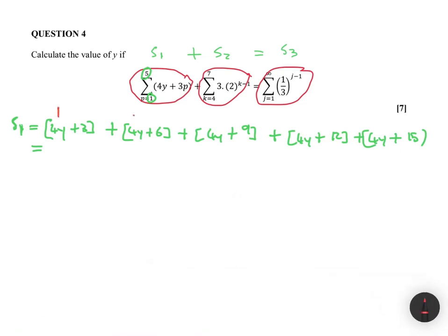Now adding all these terms together for S1, notice we have four y, four y, four y, four y, and four y — five four-y's — so the sum of that is four y multiplied by five. Then we have three plus six plus nine plus 12 plus 15: that gives 45. So we have four y times five plus 45, which equals 20y plus 45. That's our first sum.